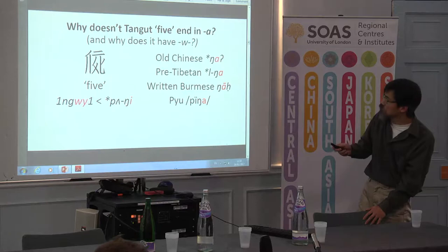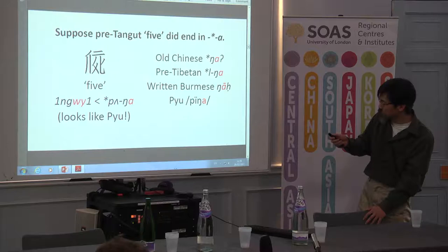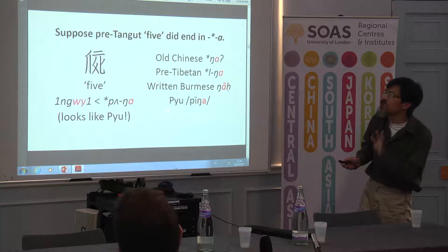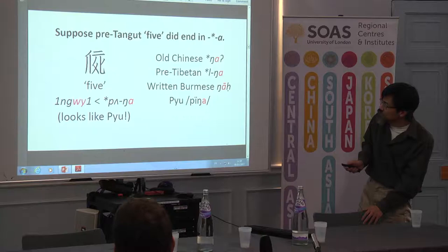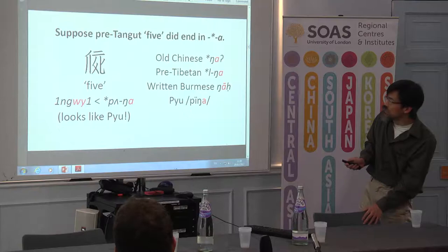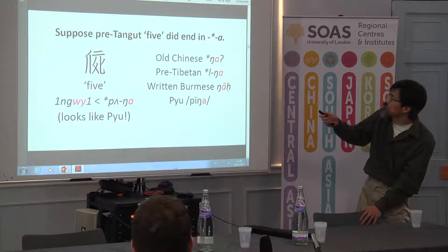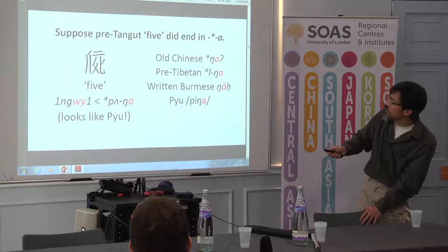Let's suppose, for the sake of argument, that all these other languages are conservative in their numerals for five, and that Tangut at one point used to have A. Interestingly, this reconstruction — which is what I proposed about five years ago — looks like Pyu, which I never saw until two years ago. So that makes me feel good. Let's adopt this hypothesis: Tangut used to have A, but somehow it changed — but why and how?